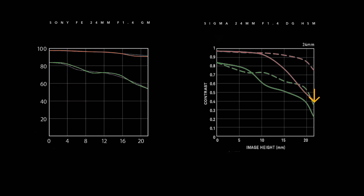That means the Sigma's contrast starts being lost around the middle of the sensor. In terms of sharpness, the Sony starts around the 80s and drops down to the 50s. The Sigma also starts around the 80s but drops dramatically all the way down to the 20s, meaning this lens loses a lot of sharpness throughout the sensor. In the center both lenses are very good, but the Sigma starts to fall off around the middle, losing a lot of contrast and sharpness, while the Sony delivers a more consistent performance.